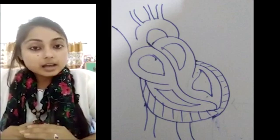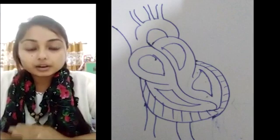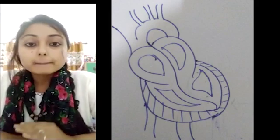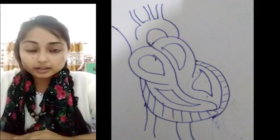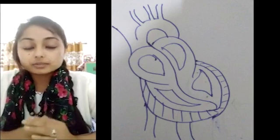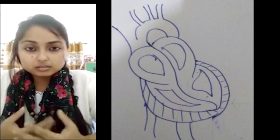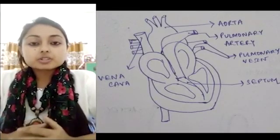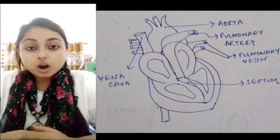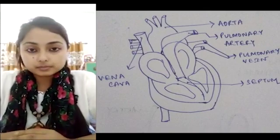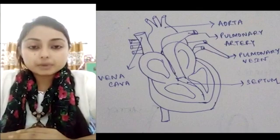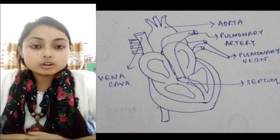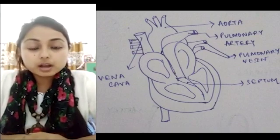The heart has a covering called the pericardium. This pericardium contains a fluid which protects the heart from friction and helps in proper functioning. A human heart or a mammalian heart has four chambers.